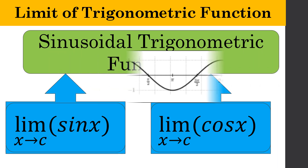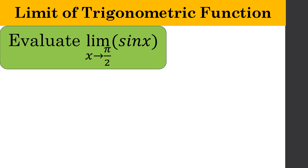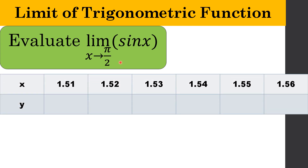For example, we will evaluate the limit of sine x as x approaches pi over 2. The value of pi over 2 is approximately equal to 1.5708, since the estimated value of pi is 3.1415. In the table of values, we choose values of x sufficiently close to pi over 2 from the left: 1.51, 1.52, 1.53, 1.54, 1.55, and 1.56.